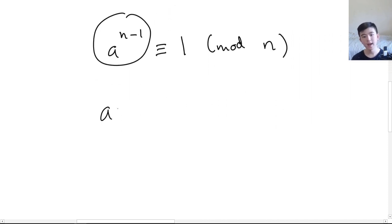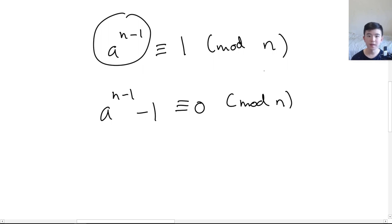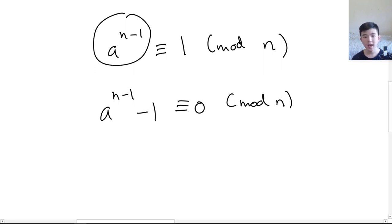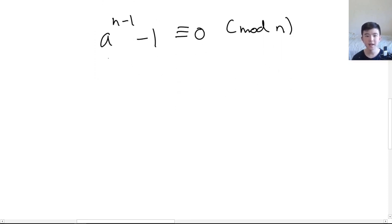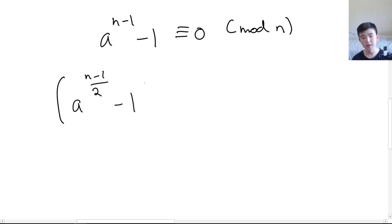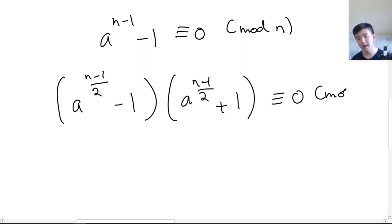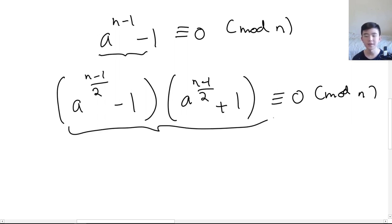We can then write a^(n−1) − 1 ≡ 0 mod n, because in modular arithmetic the equivalence sign works like the equals sign in regular math, so we can subtract numbers from both sides. Now, if n is prime then n − 1 must be even, so we can apply the difference of squares factorization to get: (a^((n−1)/2) − 1)(a^((n−1)/2) + 1) ≡ 0 mod n.